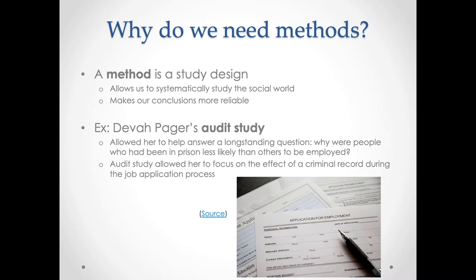What Devah Pager did was design a study — what we call an audit study — that allowed her to causally evaluate the effect of having a criminal record, or what she calls 'the mark of a criminal record,' on subsequent employment. She took four young men, two African-American and two white, gave them the exact same résumé, except that in two instances they were randomly assigned a criminal record. She used what we'll refer to as the magic of randomization.